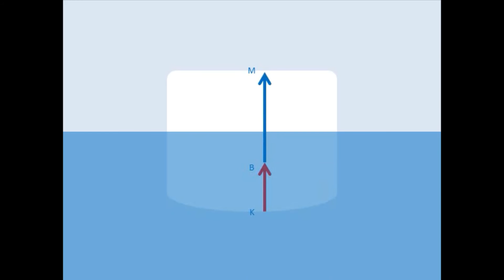BM is the distance from the center of buoyancy to the metacenter. KM is the height of the metacenter above the keel.